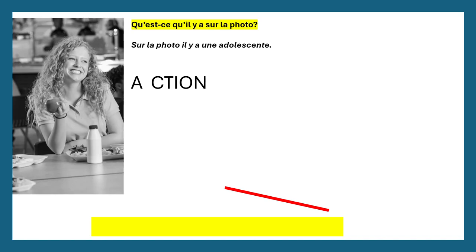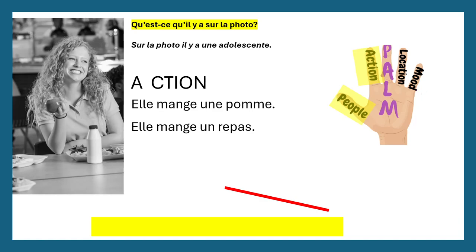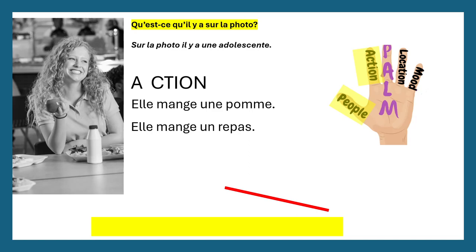Now we're going to describe the action. What is she doing? She's smiling, she's gazing furtively into the distance — but chances are you won't know how to say that. There's no point spending ages in the exam trying to think of something that just isn't in your brain. You do know, or you should know, how to say she's eating. Simply, we could say 'elle mange une pomme' — she is eating an apple. If you can't remember 'pomme', do not spend three minutes of your 12-minute preparation time on that one word. Try a way around it: 'elle mange un repas' — she's eating a meal, or 'elle mange le déjeuner' — she is eating lunch. Or keep it simple and just say 'elle mange' — she's eating. That gets your point across.